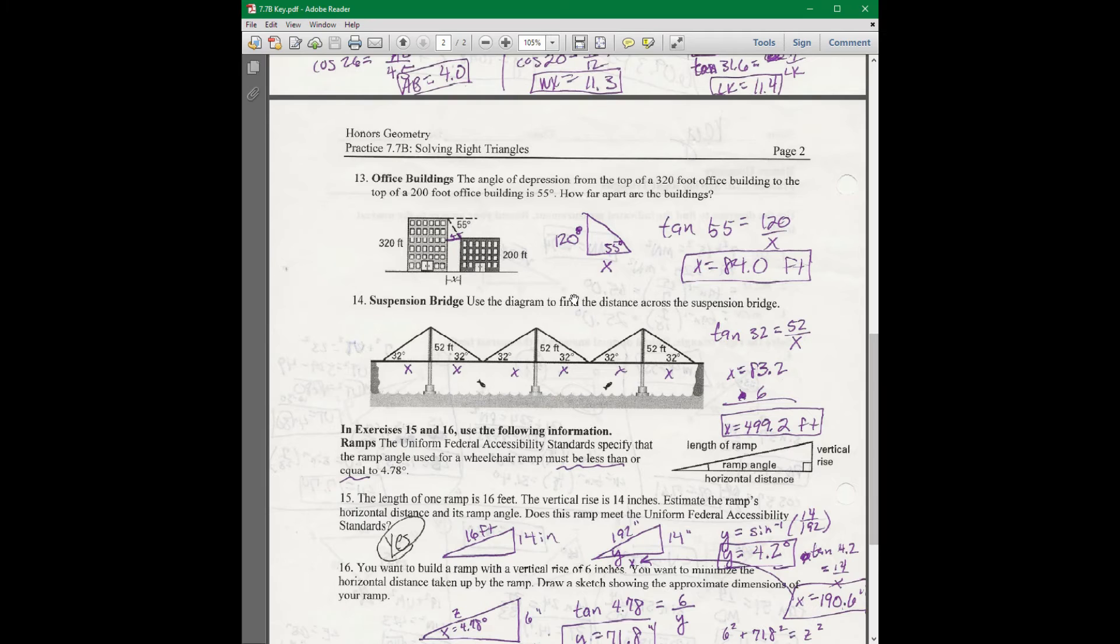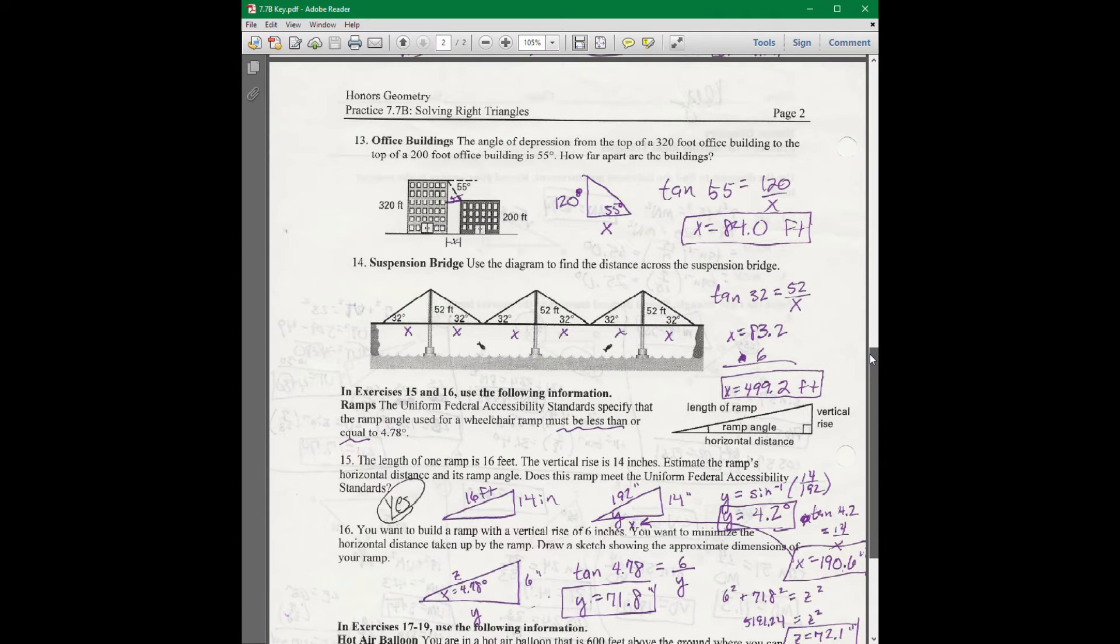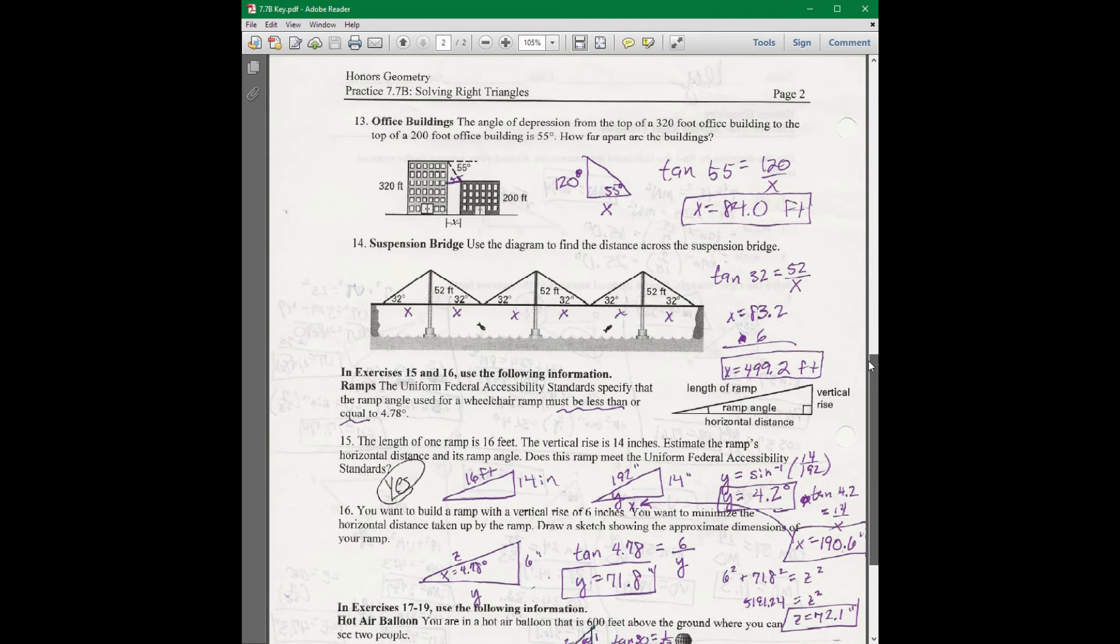And number 13, angle of depression is up here, again, which means it's the same angle as this one down here. So you have opposite over adjacent, it's tangent. Tangent is usually a lot for these word problems because it's the most useful in real life.